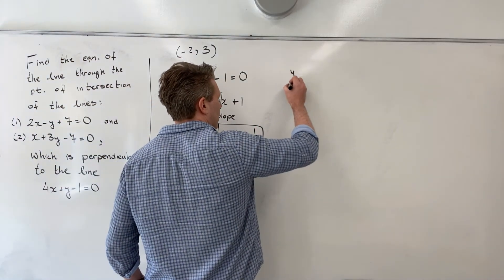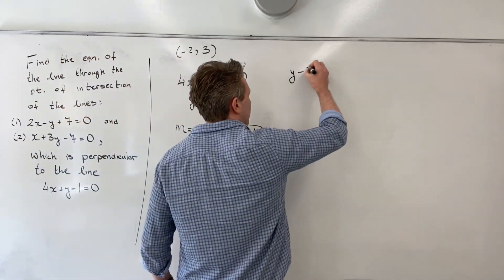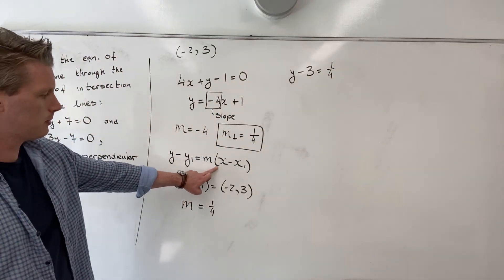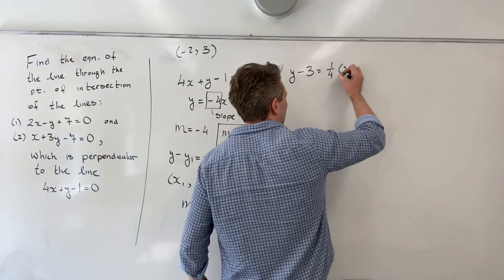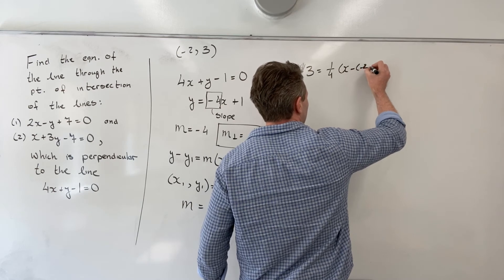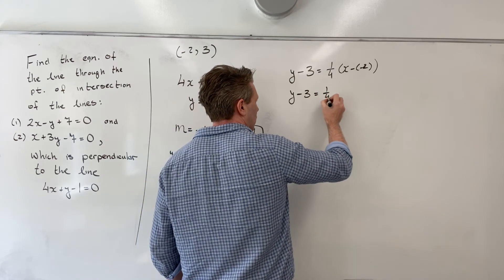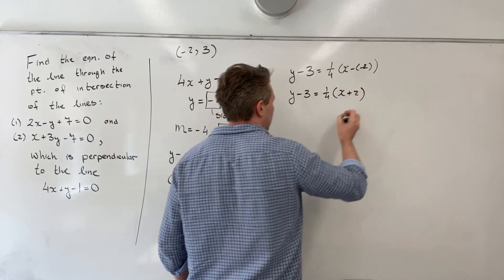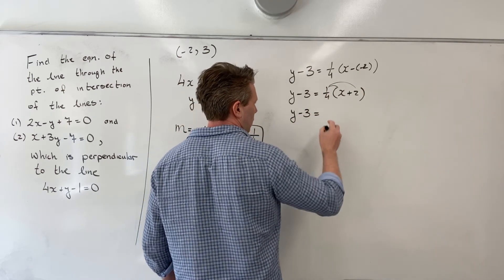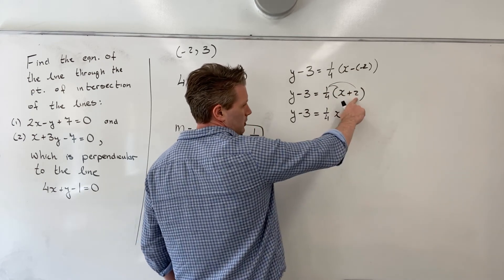It becomes y minus y1, right here, is 3, equals m, that's a quarter, times x minus x1, which is x minus negative 2. Tidying up, I get y minus 3 equals 1 quarter times x plus 2. And therefore, y minus 3, distributing in 1 quarter, I get 1 quarter x plus 1 quarter times 2 is a half.